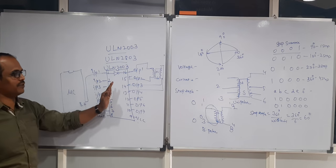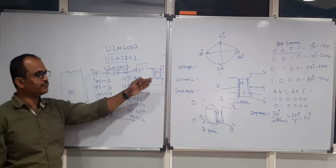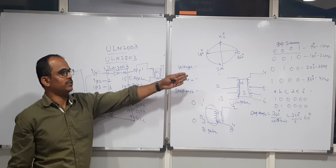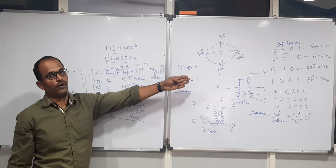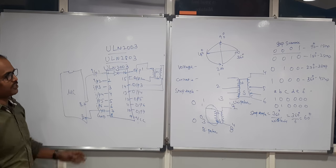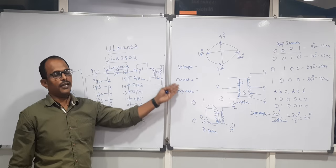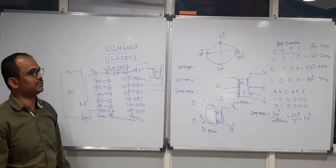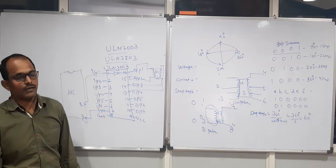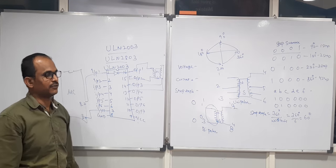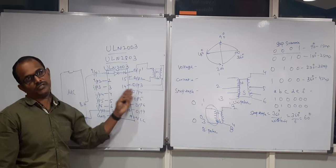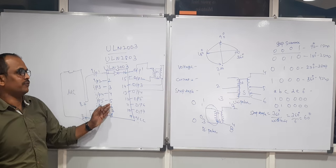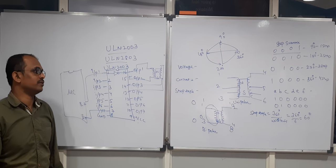The stepper motor is connected to the ULN driver IC, and the step sequence should be 1, 0, 0, 0 then 0, 1, 0, 0 then 0, 0, 1, 0 and repeat. You can interface stepper motors through ULN driver ICs or other options such as the L293D or transistors, depending on the application requirement.